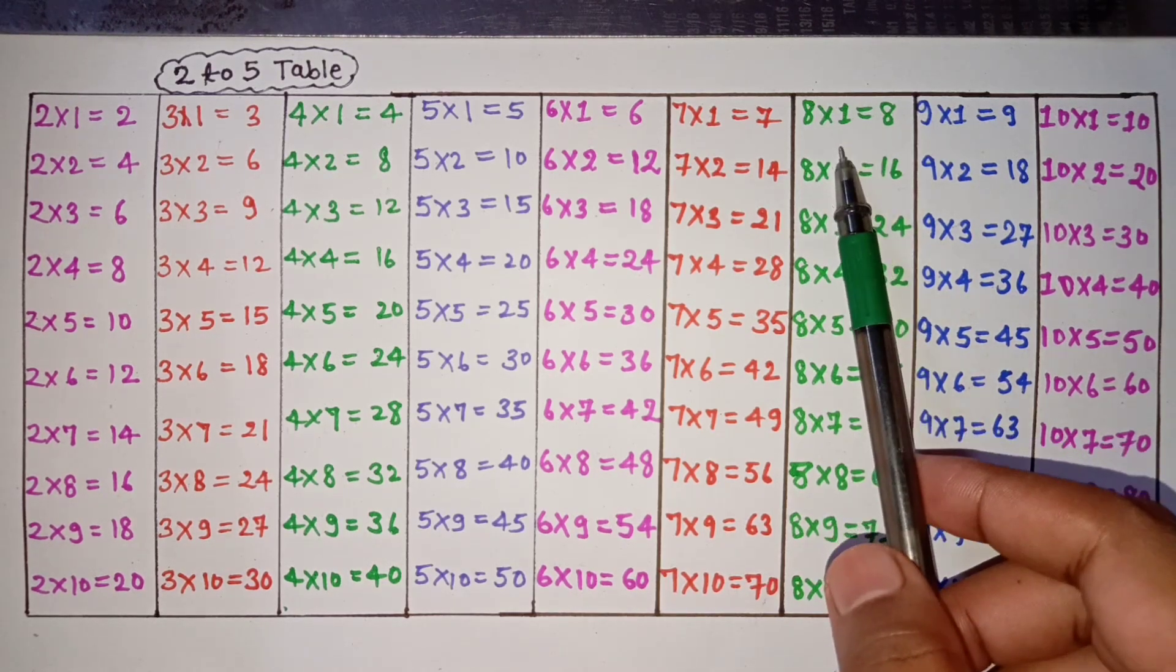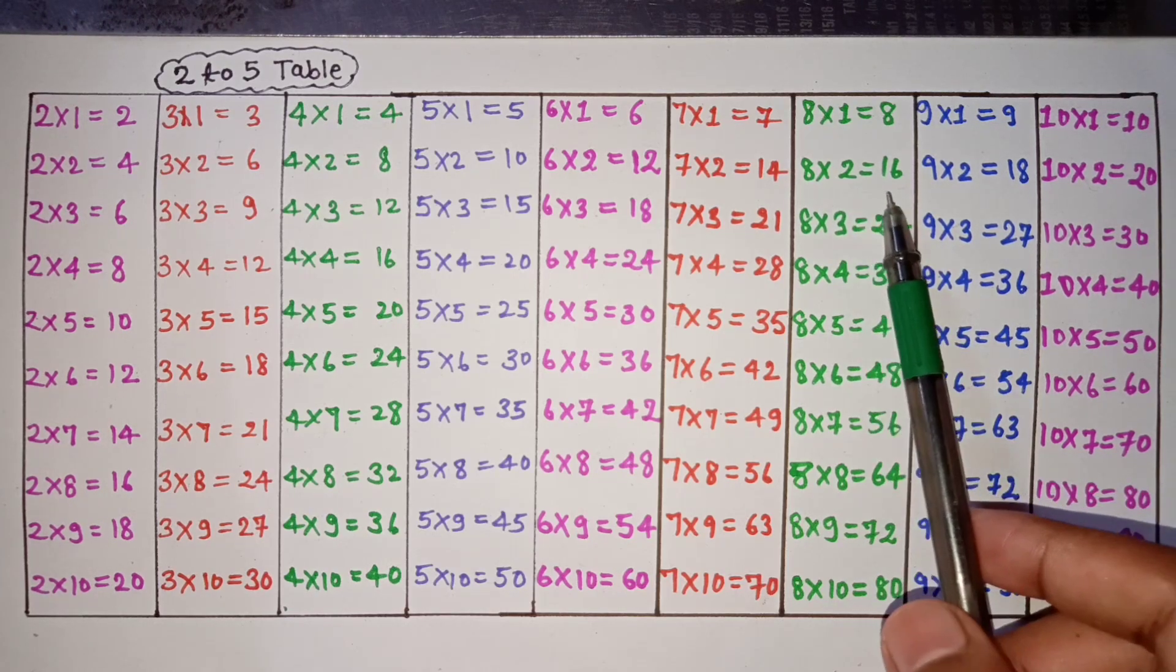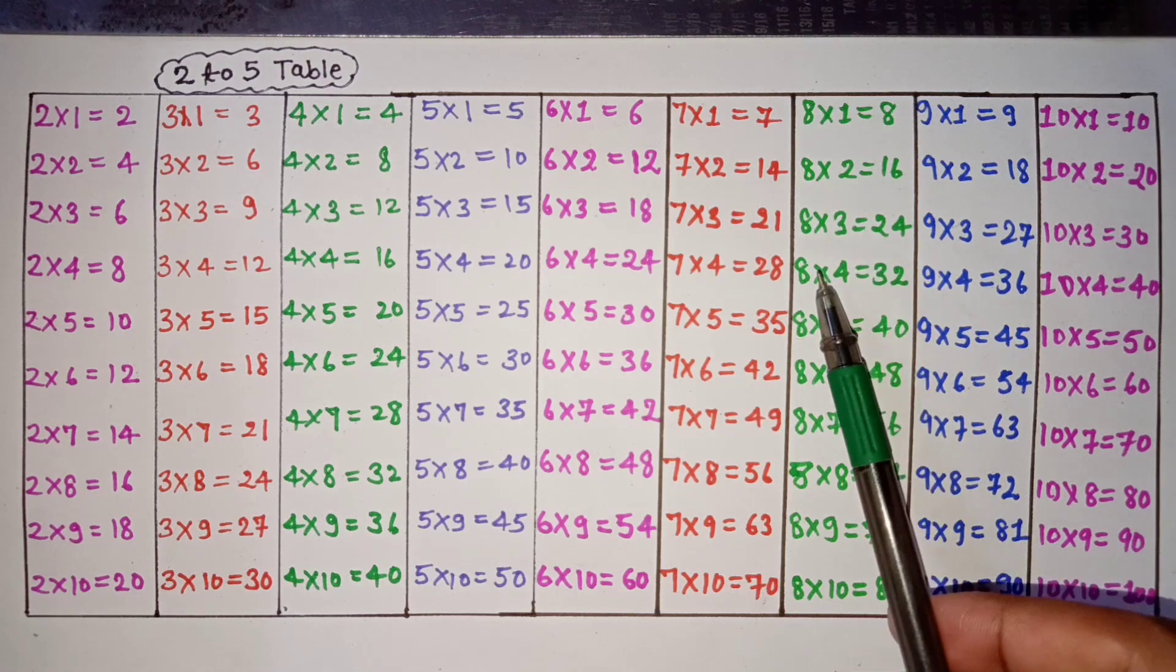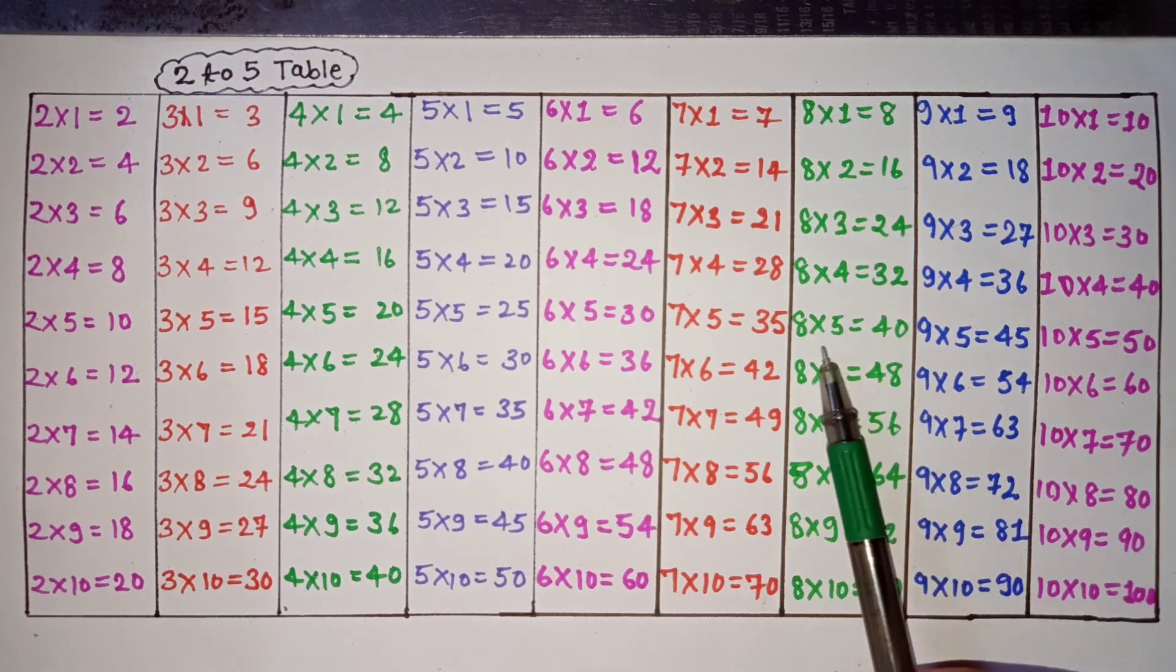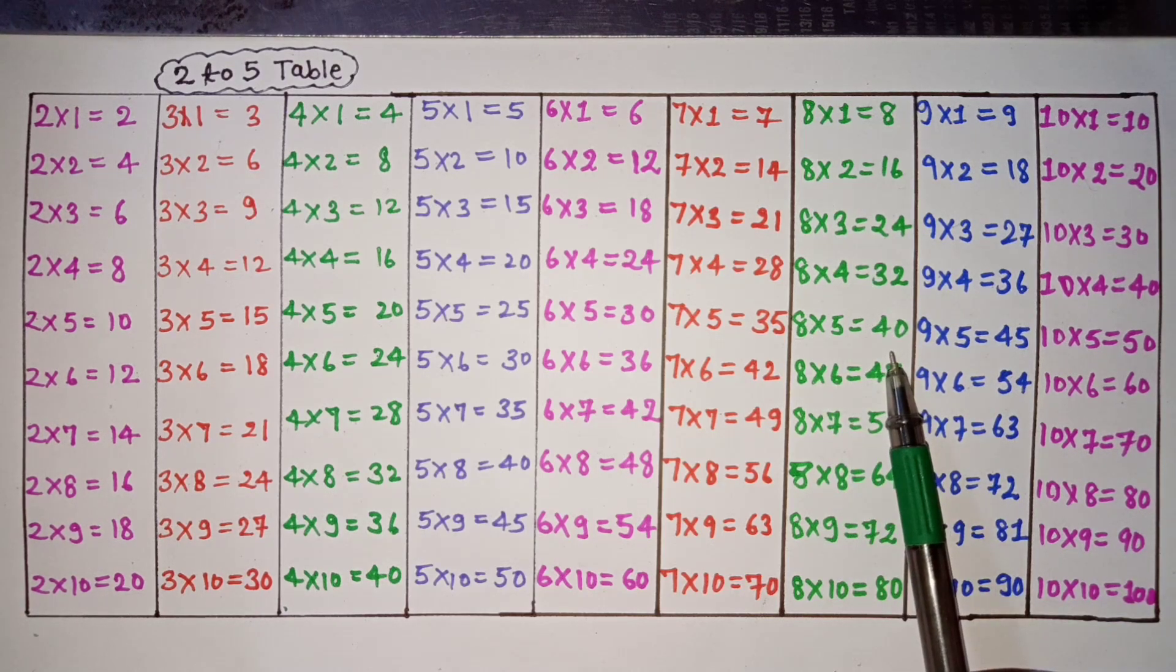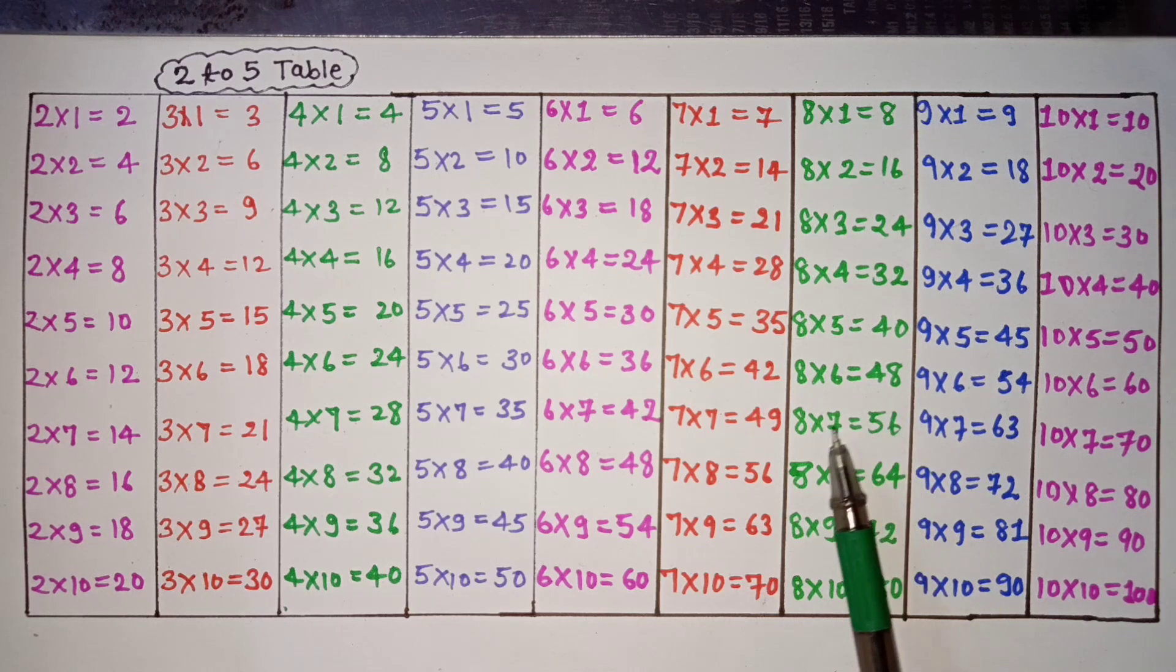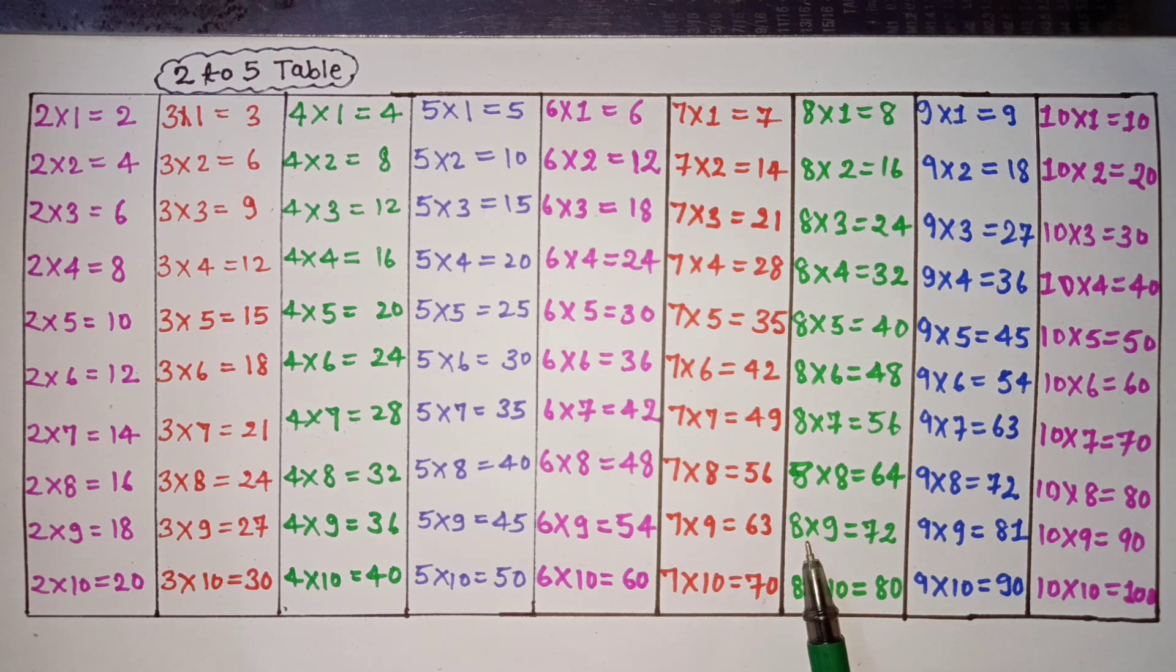8 ones are 8, 8 twos are 16, 8 threes are 24, 8 fours are 32, 8 fives are 40, 8 sixes are 48, 8 sevens are 56, 8 eights are 64, 8 nines are 72, 8 tens are 80.